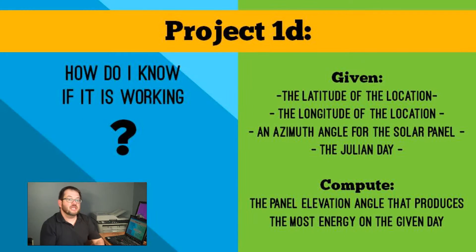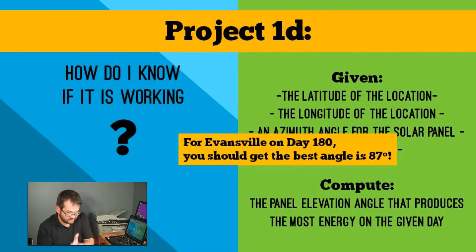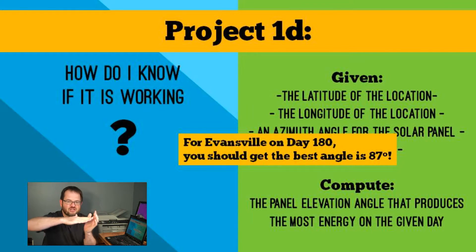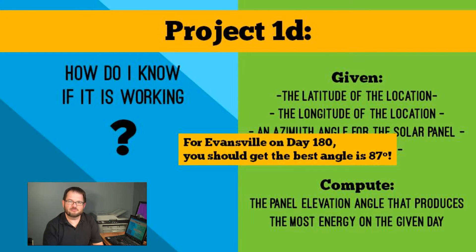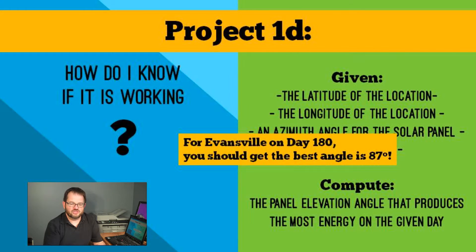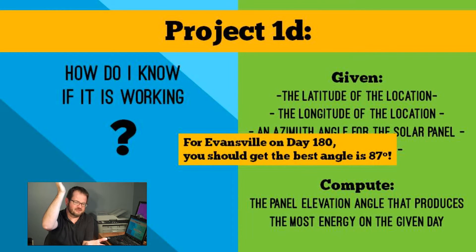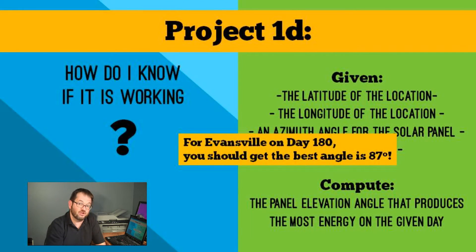How am I going to know if it's working? Well, if you use the values of the latitude, longitude, and time zone for Evansville, and you use Julian Day 180, and you use an azimuth of 180 degrees — assuming the panel is going to face south — your answer is going to be 87 degrees. Your panel needs to have its elevation angle set to 87 degrees, practically flat. At first that spooked me, but then I remembered Day 180 is the middle of summer. The latitude of Evansville is only about 10 degrees separated from the solar declination on that day, so the sun is coming practically right overhead, about 80 to 85 degrees above the horizon. So almost flat is going to be the most optimal orientation for the panel on that particular day.